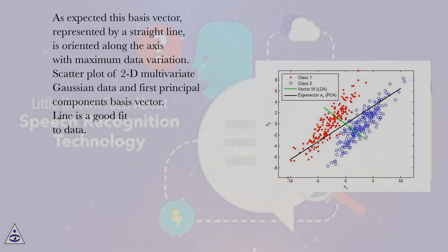Scatterplot of 2D multivariate Gaussian data and first principal components basis vector. Line is a good fit to data.